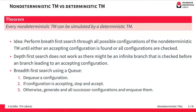In this queue we first dequeue the next configuration we want to look at. Then we check whether this configuration is accepting; if it is, we simply stop and accept. Otherwise we generate all the successor configurations and put them into the queue.